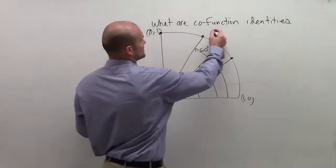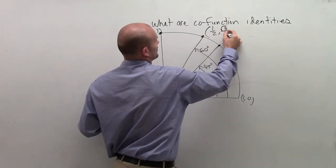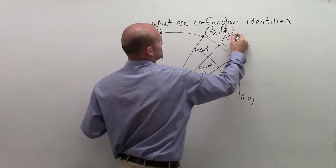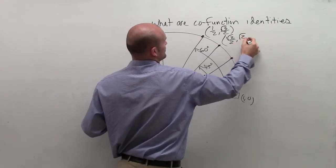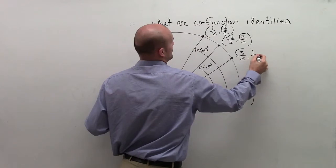Now for each one of these angles, we could say that this one is 1 half comma square root of 3 over 2. This one, we have square root of 2 over 2 comma square root of 2 over 2. And this one, we have square root of 3 over 2 comma 1 half.